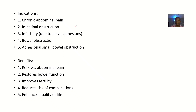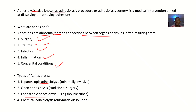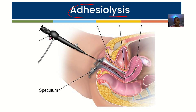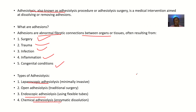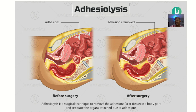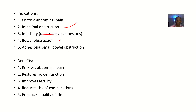The indications — that is, when to perform this correction — include chronic abdominal pain identified from the patient's history, intestinal obstruction, infertility (for example when the uterus is adhered so that implantation cannot occur), and adhesional small bowel obstruction.